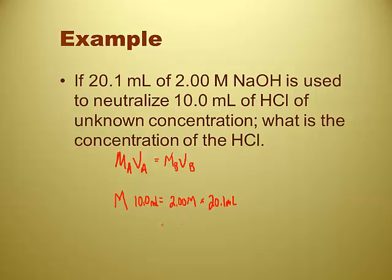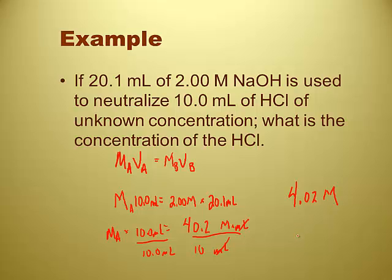So 2 times 20 is going to be about 40.2 molar times milliliters. And my MA here is still going to be multiplied by my 10.0 milliliters. I'm going to divide both sides by 10 milliliters, which is algebraically correct. Milliliters and milliliters are going to go away. So 40 divided by 10, that should be about 4.02 molar solution. And that's the concentration of our acid. That's going to be our MA.